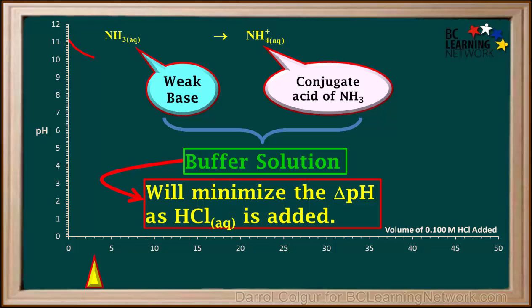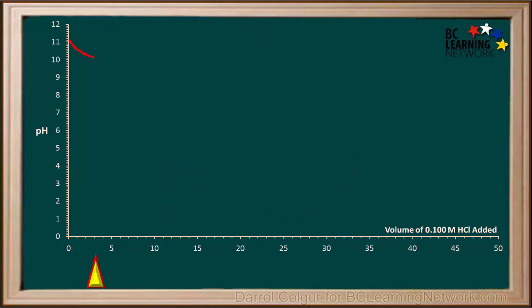Recall that a mixture of a weak base and its conjugate acid forms a buffer solution. A buffer solution minimizes the change in pH as HCl is added to the mixture in the beaker. So because of this buffering effect, between 3 ml and 22 ml, the slope of the curve is less steep.